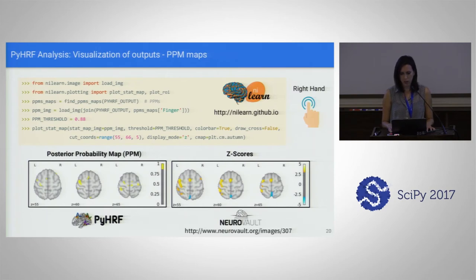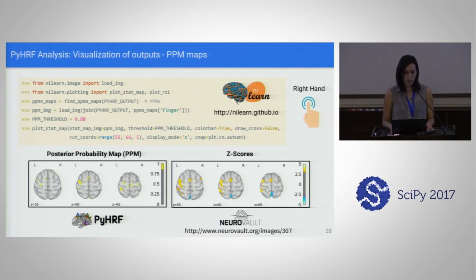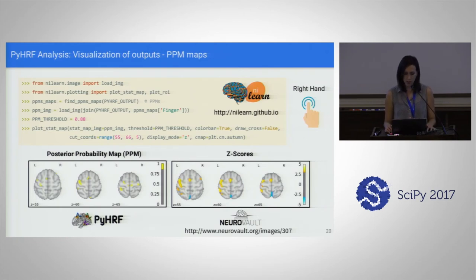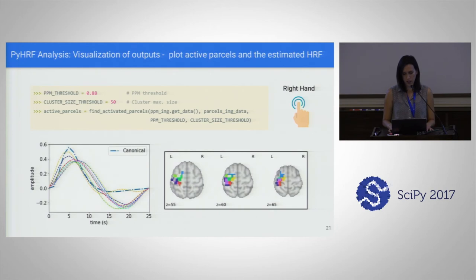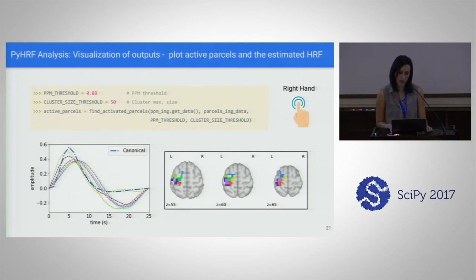For visualization of output, we usually use Nilearn. In the output you can find a function called find_ppm_maps. We can plot these PPMs using a PPM threshold and compare them to the z-scores saved in NeuroVault — a site where statistical maps are saved. Those are for GLM. We see that the posterior probability map gives activations that are smaller, partly because our data hasn't been previously smoothed. We can also find activated parcels by thresholding these PPM maps, and we plot the HRFs estimated in those active parcels.